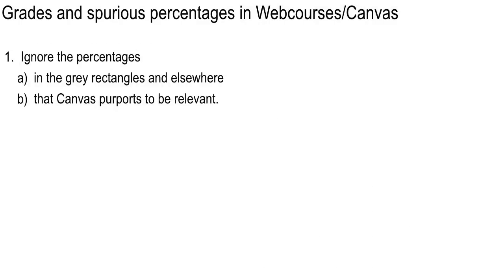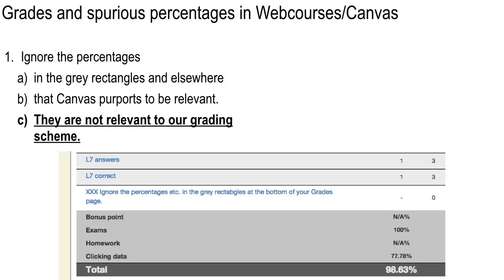We were doing stopping time problems last meeting on Tuesday. Let's continue, but before we do that, I want to go over a couple things in WebCourses with you. There are some percentages in there that I really, really hate. They're in this gray rectangle at the bottom of the grades page. They are irrelevant to us. Because WebCourses generates them automatically, but I didn't program those in. WebCourses knows nothing about our grading scheme.